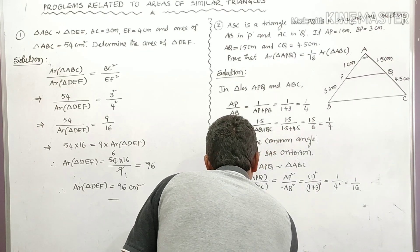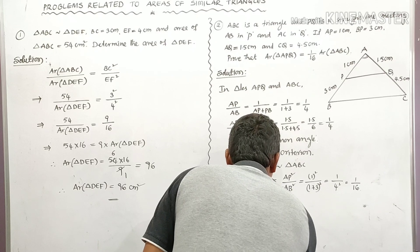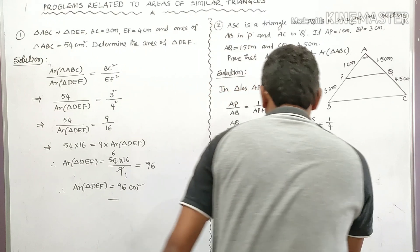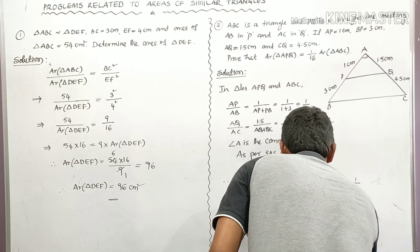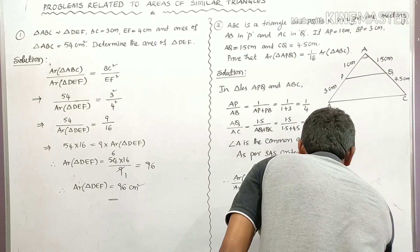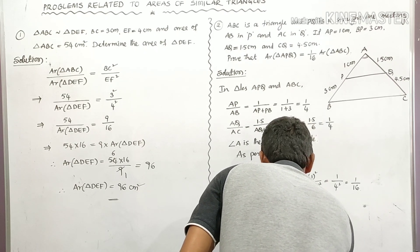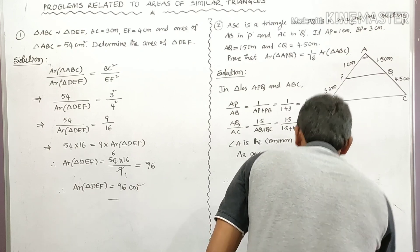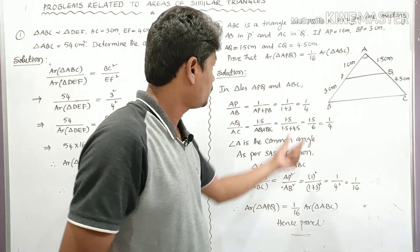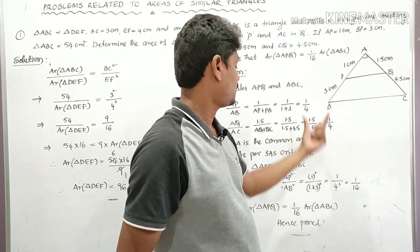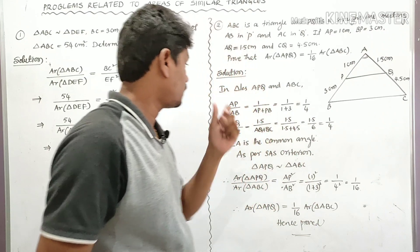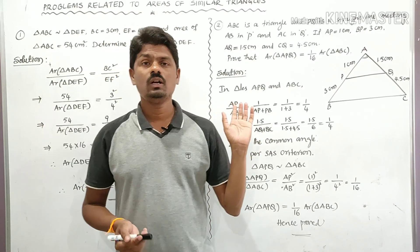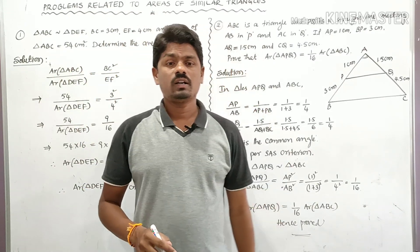Therefore, area of triangle APQ equals 1 by 16 into area of triangle ABC. Taking area of triangle ABC to the right side — here it is dividing, so it multiplies — giving 1 by 16 into area of triangle ABC. This is what we had to prove. Hence proved. He was asking to prove that area of triangle APQ equals 1 by 16 into area of triangle ABC. Hence proved. These are the two problems related to the areas of similar triangles.